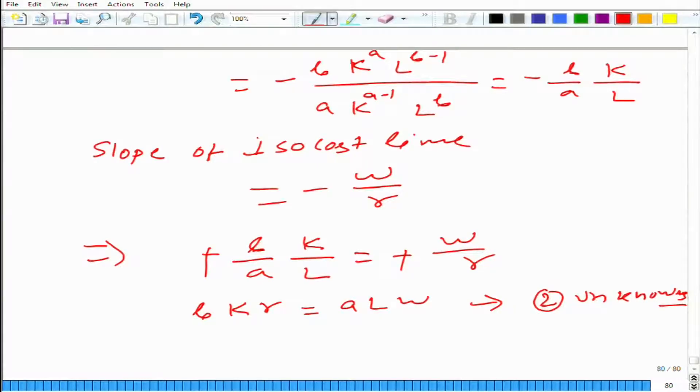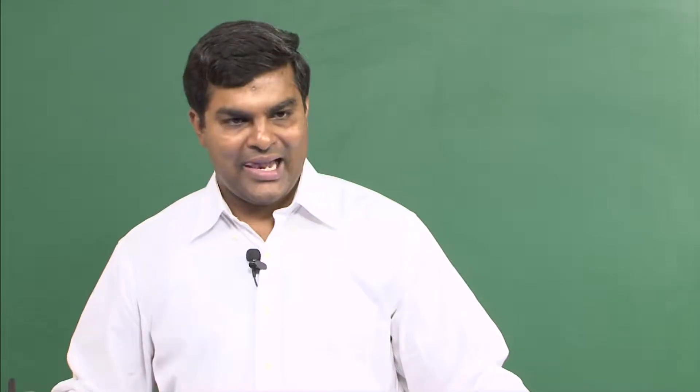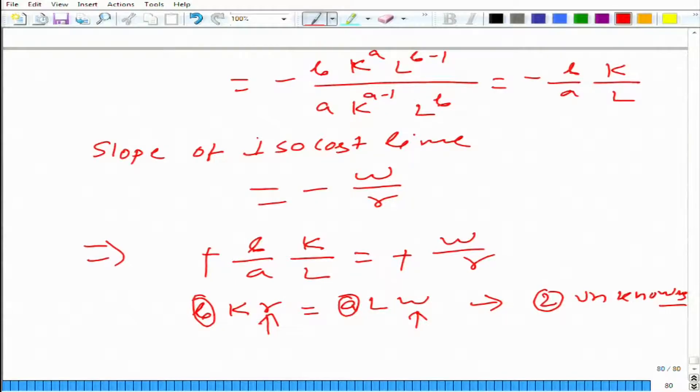What are the unknowns? b is given in the equation, a is also given, r and w are market determined. What does this firm need to decide? K and l. These two are the variables for this problem.